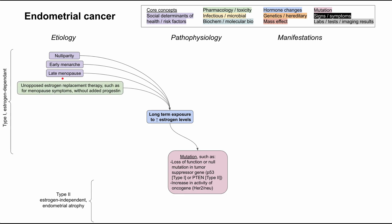Some women get unopposed estrogen replacement therapy, which is helpful for menopause symptoms like hot flashes, headaches, or vaginal dryness — symptoms that occur when estrogen drops around age 51. Usually, estrogen replacement therapy should be given with progestin, which has a protective effect against estrogen's impact on the endometrium. When estrogen replacement therapy is given without progestin, that can predispose a woman to endometrial cancer.